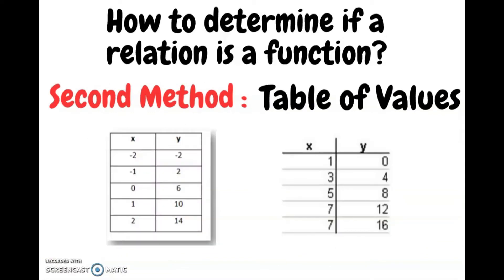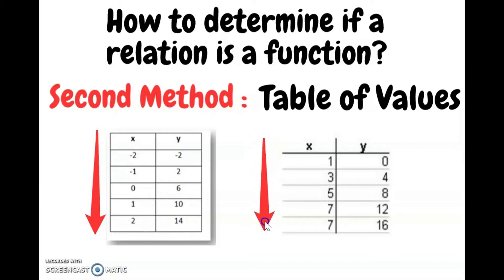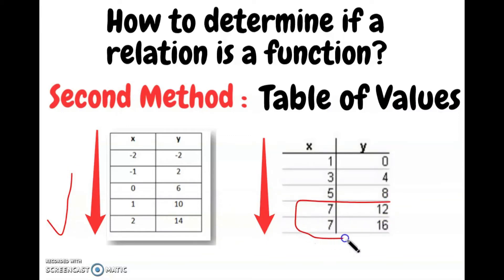The second method to determine whether a relation is a function is a table of values. I have two tables of values below, and I'm going down the x column making sure each x value is unique. For the left table, all x values are unique — it is a function. However, in the right table, the x value seven appears two times, meaning it is not a function.